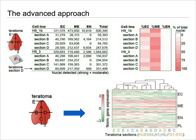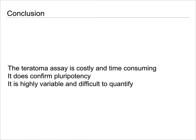To conclude on what we can use this assay for: the teratoma assay is costly and time-consuming, but it can be used to confirm the basic concept of pluripotency, because we could clearly show all of our cell lines differentiate into all three germ layers. But it's also worth noting that it's a highly variable assay, and it's very difficult to quantify the actual differentiation into the germ layers.